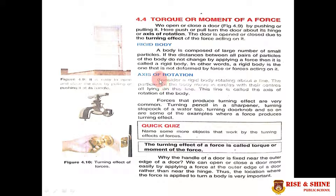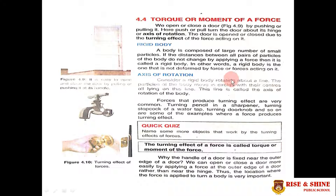As we discussed earlier, this door is fixed along this axis — as you see the cursor — this axis is called the axis of rotation, around which a body rotates. Consider a rigid body rotating about a line. The particles of the body move in circles with their centers lying on this line. This line is called the axis of rotation of the body.